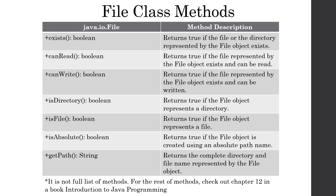The File class has many methods. Here I've provided just a few of the most commonly used ones. The first method is exists() — it checks whether a file exists or not, and its return type is boolean. canRead() checks whether we have access to read data from that file. Sometimes we can set access specifications, for example allowing writes but not reads. This method checks whether we can read the data, returning true if yes and false if no.